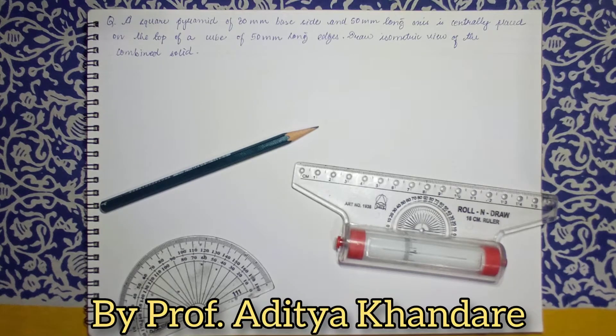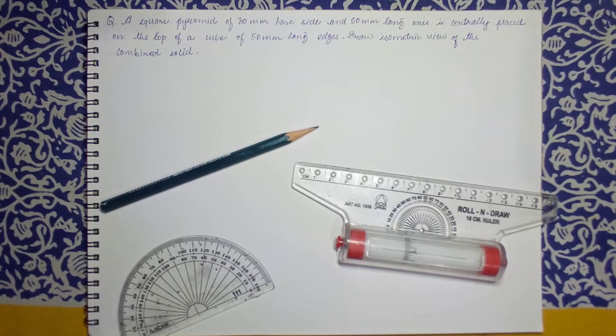Hello dear students, once again we are back with a new video. Today we'll see a problem on isometric view. A square pyramid of 30mm base side and 50mm long axis is centrally placed on top of a cube which has its edge of 50mm. Draw isometric view of the combined solid. So here we have two solids - one is a cube of side 50mm on which a square pyramid is placed.